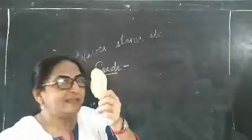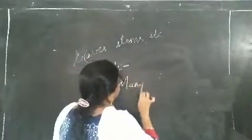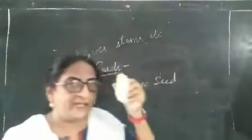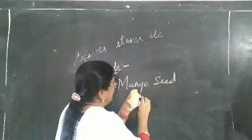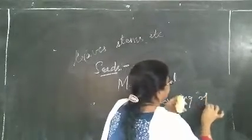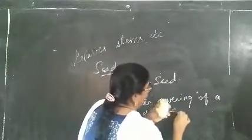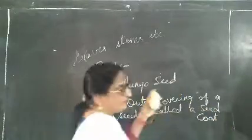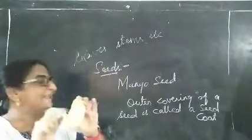Now see this seed. What is this seed? Yes, very good — it is a mango seed. When you see this seed, you will observe some parts on it. Now, what is this outer covering? The outer covering of a seed is called a seed coat. This seed coat will protect the seed inside.